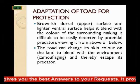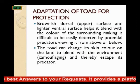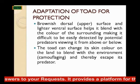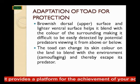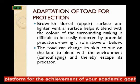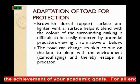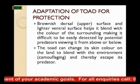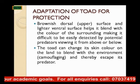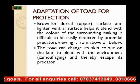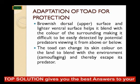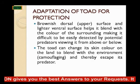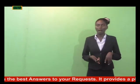The toad also has a brownish dorsal surface — that is, the upper surface is brownish — while the ventral surface, the underside, is lighter. This helps it blend with the color of the environment, making it difficult to be easily detected by potential predators viewing it from above or below. The toad can also change its skin color on land to blend with the environment's color — that is camouflage — to escape its predators.